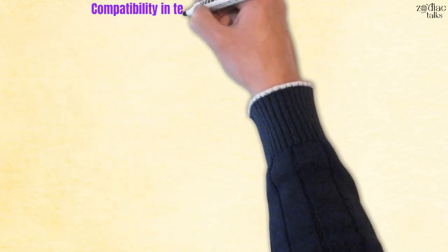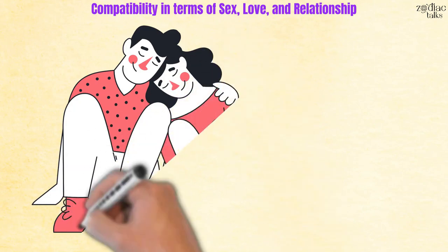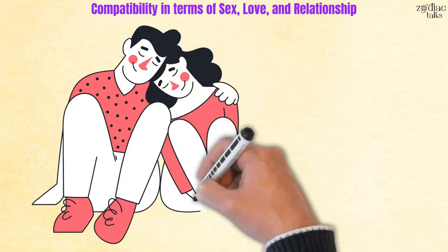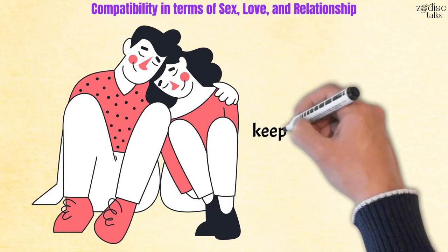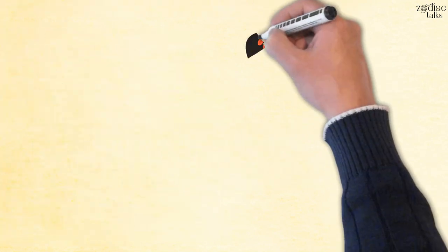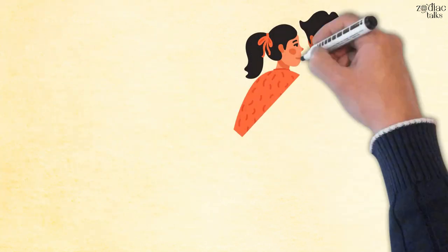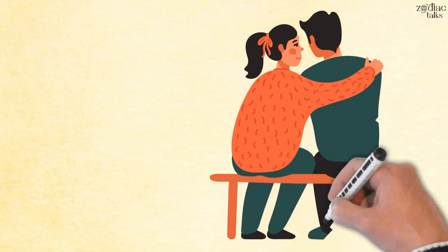Compatibility in terms of sex, love, and relationship. In terms of relationships, Capricorn women and Taurus men can grow a long-lasting partnership. Both of them are deeply invested in practical matters, so keeping the romance alive might be a challenge for them. If they remember to constantly show affection and appreciation to their partner, this relationship can provide a sense of emotional security.